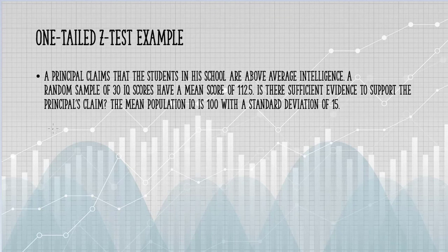Is there sufficient evidence to support the principal's claim? The mean population IQ is 100 with a standard deviation of 15. The first step is to write the null hypothesis.